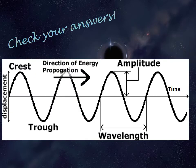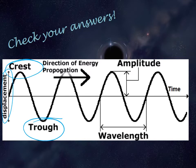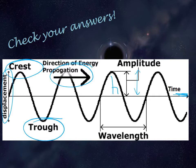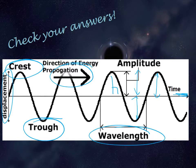Welcome back — let's check your answers. Displacement, how far the wave moves, is on the y-axis. The crest is the maximum displacement, and the trough is the minimum displacement from the resting position. For transverse waves, the direction of energy propagation is at right angles to the motion of the wave as it goes up and down. The amplitude is the distance from the rest position to the crest, or from the rest position to the trough. The wavelength is the distance between troughs or between crests.